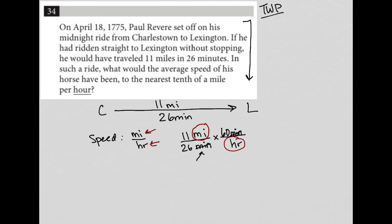So let's do the math now. 11 times 60, I just go to my calculator and type that in. This is the calculator section. So 11 times 60 is 660. So I have 660 miles in 26. This 26 is still here.